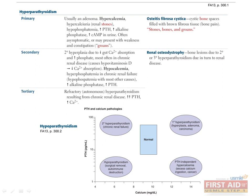Tertiary hyperparathyroidism occurs as a sequela of secondary hyperparathyroidism. After the parathyroid glands have been chronically stimulated by constant hypocalcemia, they occasionally start to autonomously produce parathyroid hormone, essentially becoming large adenomas. Serum levels of both PTH and calcium are high.